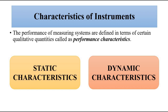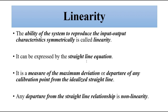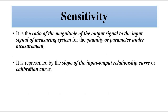In this video we are going to discuss linearity in measurement, specifically in the input-output relationship curve. Before we discuss linearity, we need to revisit sensitivity, which we discussed in the previous video. Sensitivity defines the input-output relationship — it is the ratio between the output signal and the input signal, calculated from the slope of the input-output relationship curve.